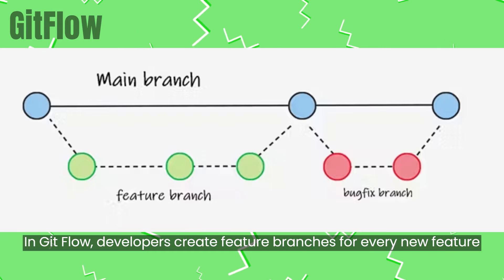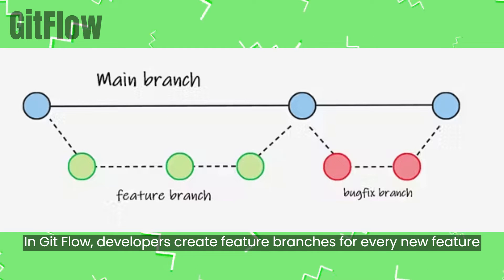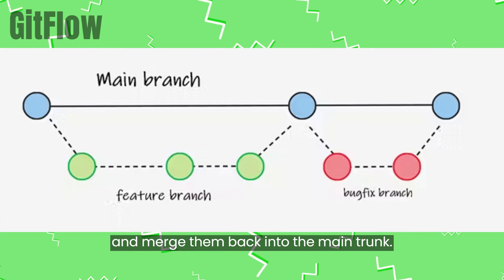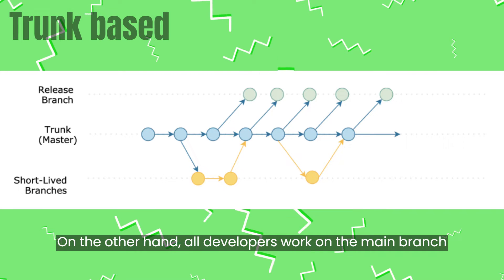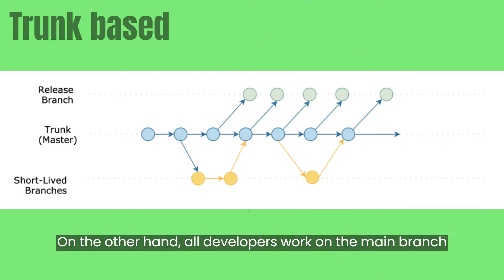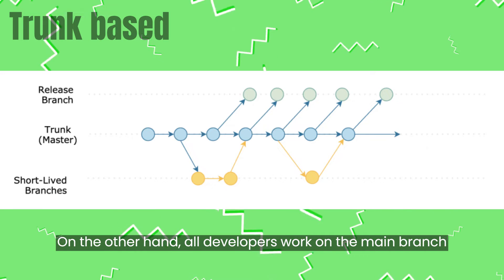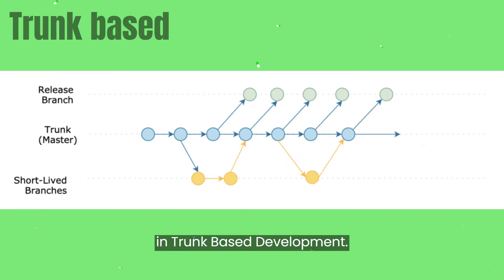In GitFlow, developers create feature branches for every new feature and merge them back into the main trunk. On the other hand, all developers work on the main branch in trunk-based development.